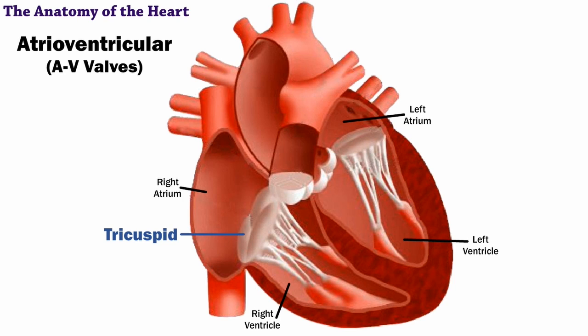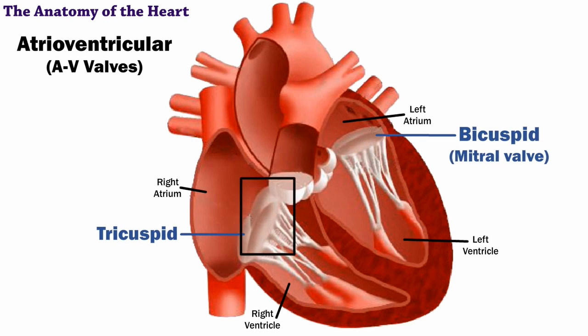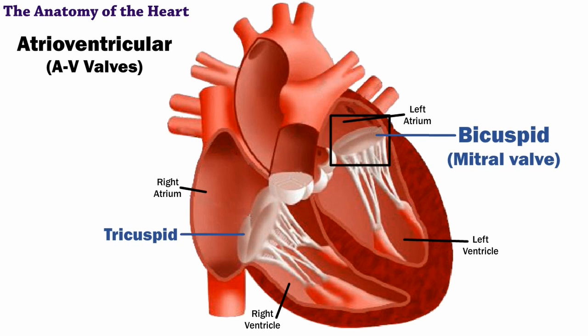They are the tricuspid and the bicuspid, or mitral, valve. The tricuspid is on the right side and the bicuspid, or mitral, is on the left side.